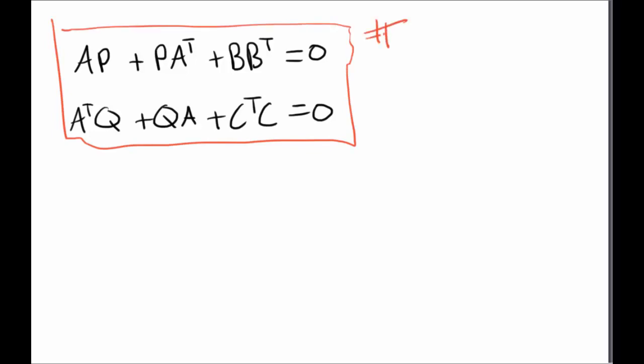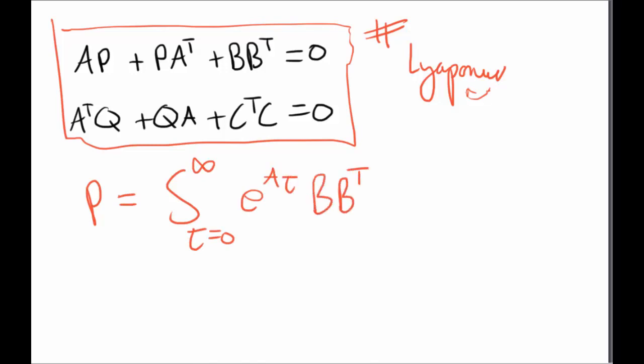The first part is stating the two Lyapunov equations, which are the main foundations for the Hankel singular value decomposition method. Where A, B and C are the standard matrices within the continuous state space system. P is the controllability gramian and Q is the observability gramian in the continuous domain, where T is transpose.